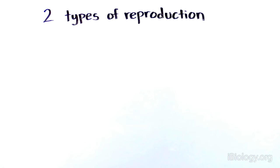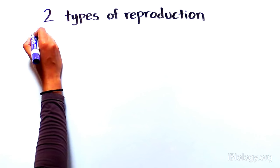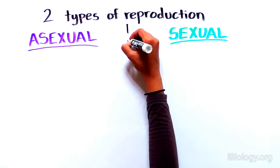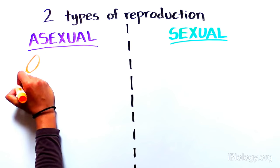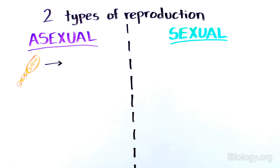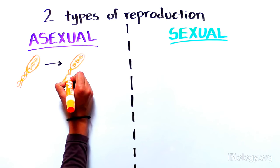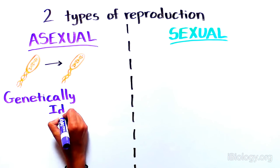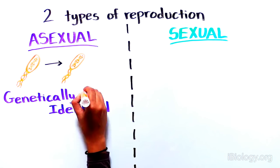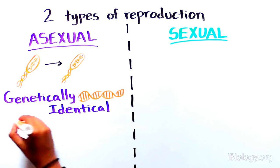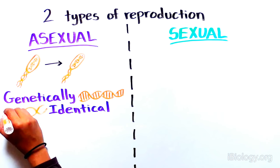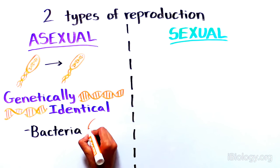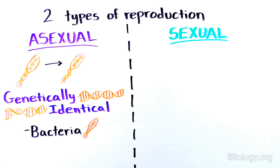The two types of reproduction are asexual and sexual. Asexual reproduction is when an organism makes a genetically identical clone of itself. Most of the simplest life forms, such as bacteria, reproduce in this manner.